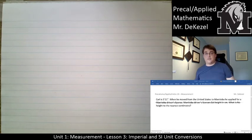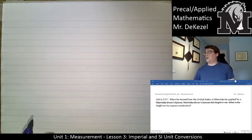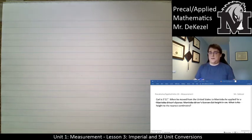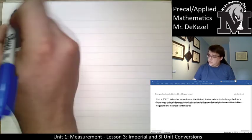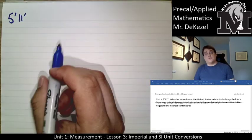Let's go to the next example. Carl is 5 foot 11, and he moved from the United States to Manitoba. He wanted to apply for his driver's license, and driver's licenses list the height in centimeters. What is the height of Carl to the nearest centimeter? We've got a mixed unit—feet and inches—so the first thing we need to do is combine that into one unit.